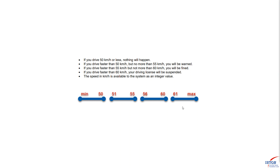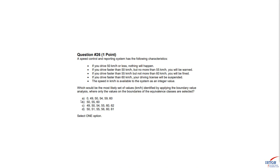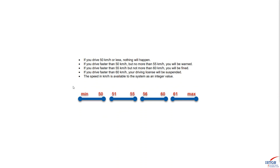We need to choose the boundary value analysis technique. Since the description doesn't specify two-value or three-value, we default to two-value boundary analysis. When we defined the equivalence classes, we already identified the min and max values of each class, so our boundary values are automatically defined: 50, 51, 55, 56, 60, and 61.